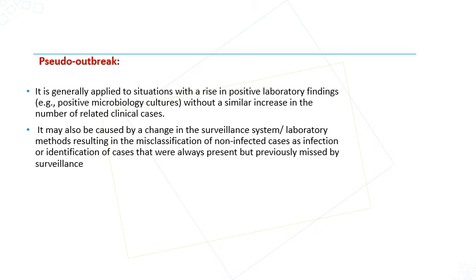A pseudo-outbreak is generally applied to a situation where there is a rise in positive laboratory findings without a similar increase in clinical cases. Several factors can lead to a pseudo-outbreak: changes in the surveillance system, the laboratory introducing a new test, or contamination in samples or laboratory machines. All of this can lead to an increase in laboratory results that does not match an increase in clinical cases — we call this a pseudo-outbreak.